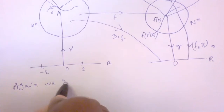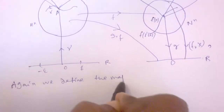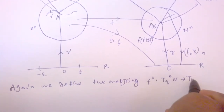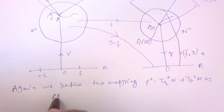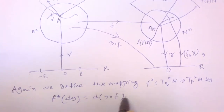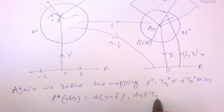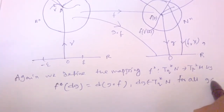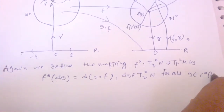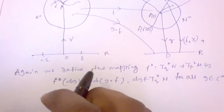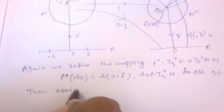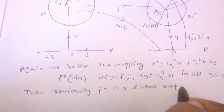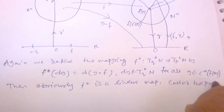We now define another mapping: the pullback F*: T*_Q N → T*_P M, defined by F*(dg) = dz ∘ dc, where dg belongs to T*_Q N. This is clearly a linear map, called the pullback of the mapping F.